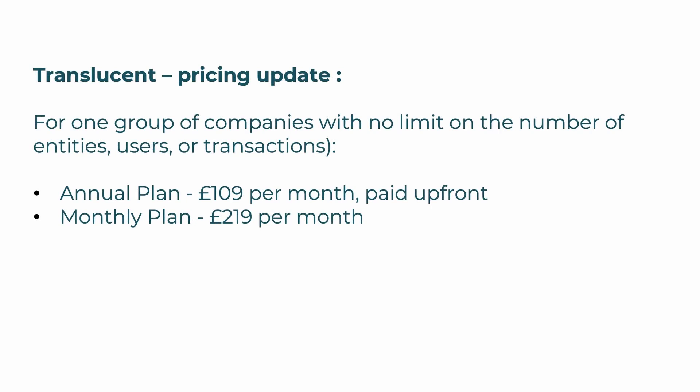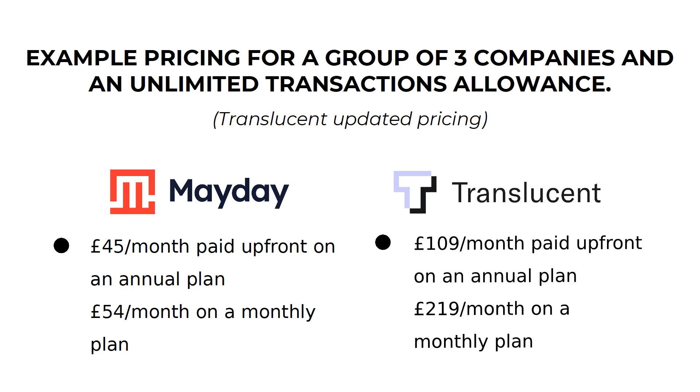Quick update: Translucent did actually come back after filming the video with a pricing quotation for three companies within a group. They charge on a per-group basis as opposed to a per-company basis like Mayday. For a group of companies with no limit on entities, users, or transactions, the annual plan is £109 per month paid up front, and the monthly plan is £219 per month. So for smaller groups, Mayday would probably be the cheaper option, whereas for larger groups, Translucent may be better from a pricing point of view.